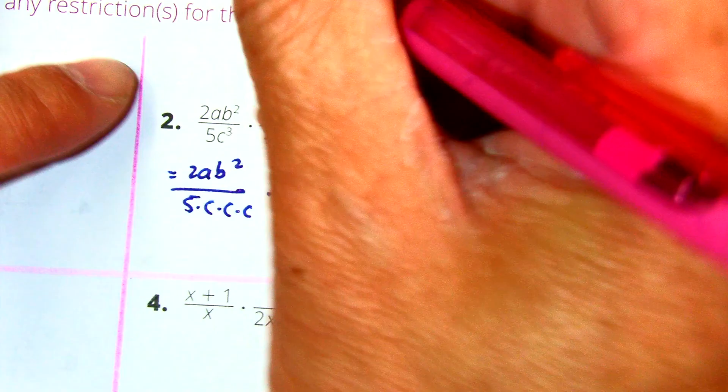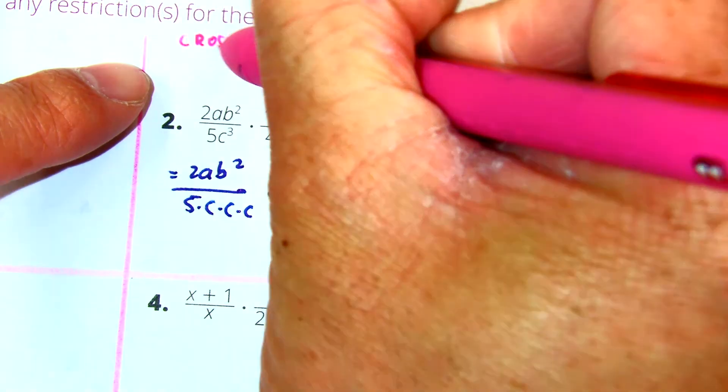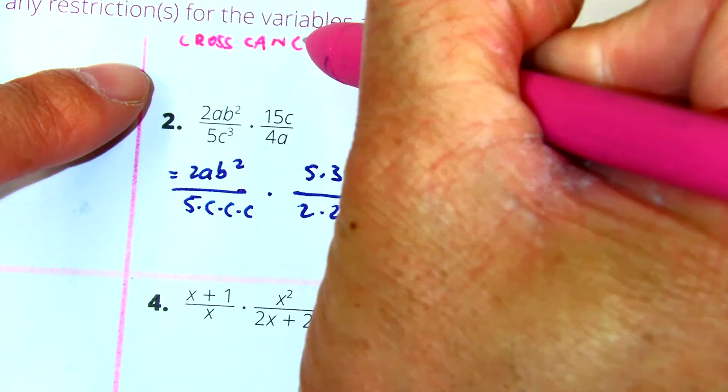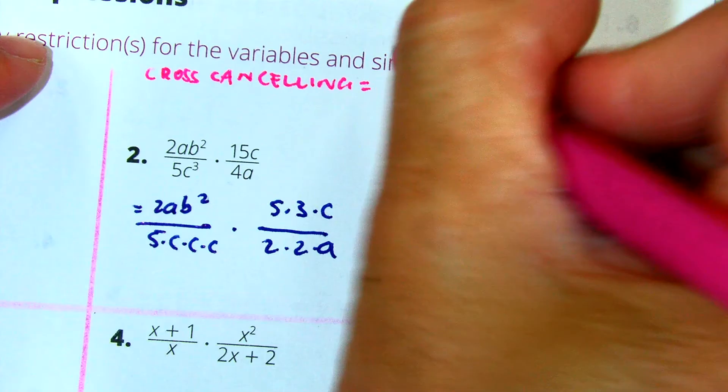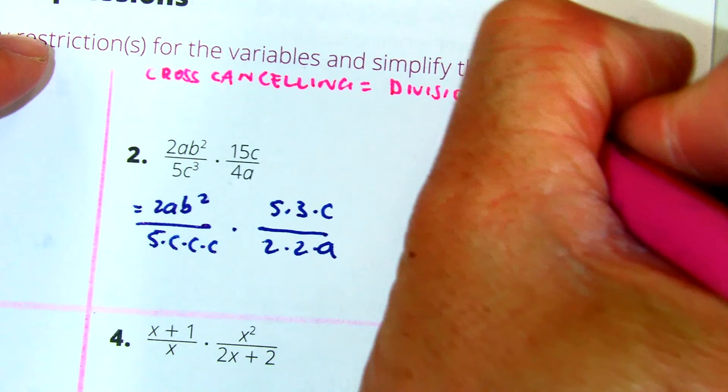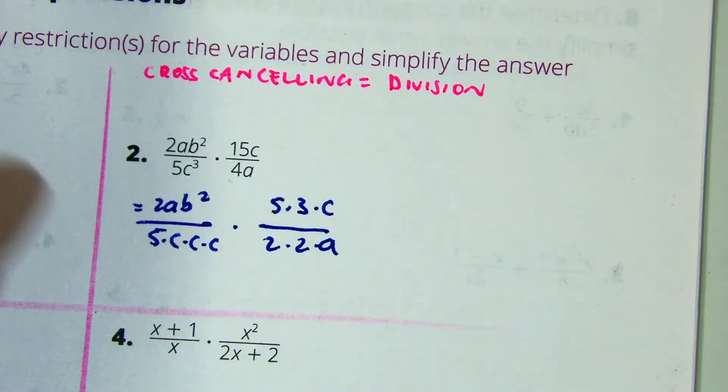Okay, so this is called cross-canceling. What is it called, class? Cross-canceling is basically just division. Cross-canceling is division.